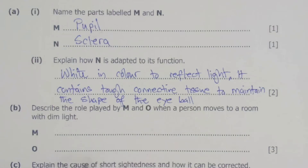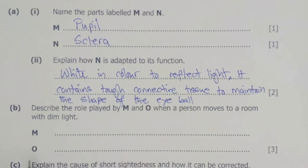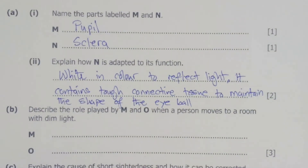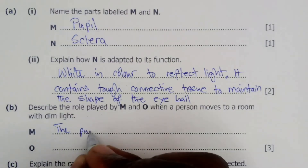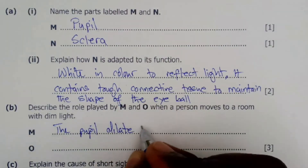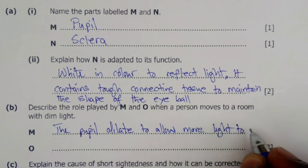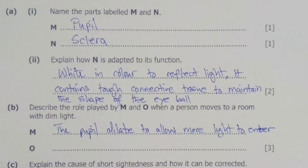The next question is B, and B says describe the role played by M and O when a person moves to a room with dim light. It means the person has moved into a much darker room. So when you move into dim light, the pupil will actually dilate to allow more light to enter.